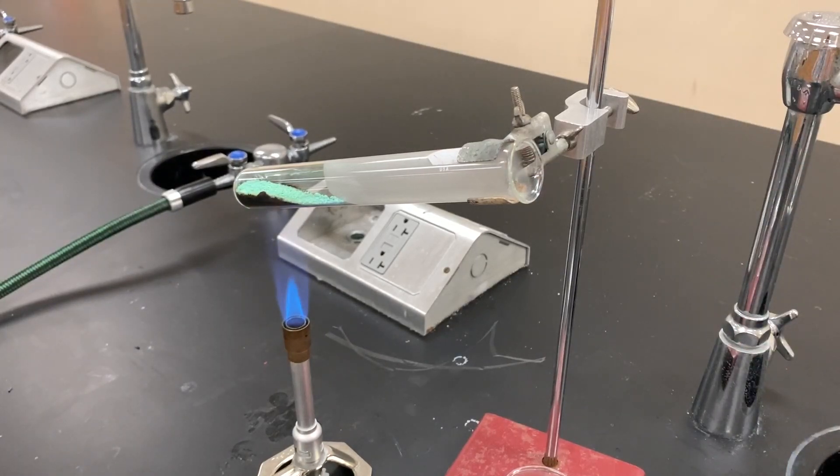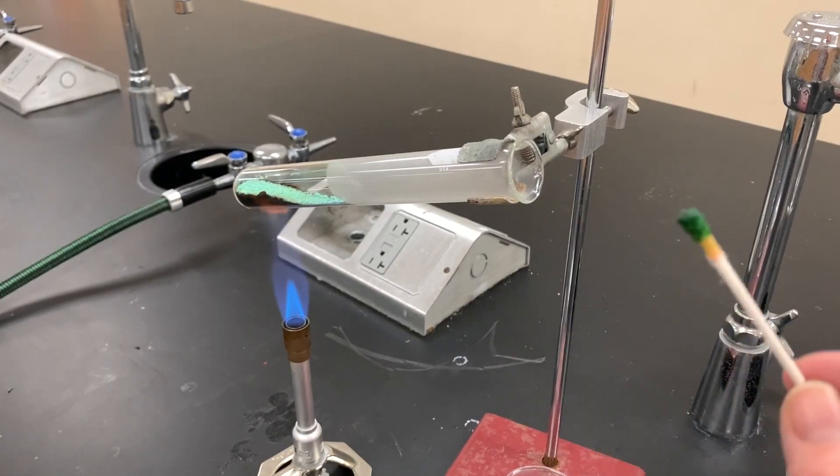The second test you can do is using universal indicator. It starts out green. Keep universal indicator away from a flame because the liquid is flammable. I just soaked a little bit on the end of a Q-tip and it's green.